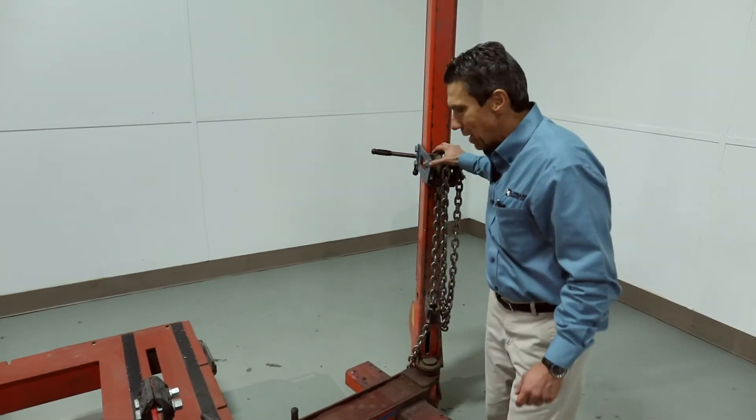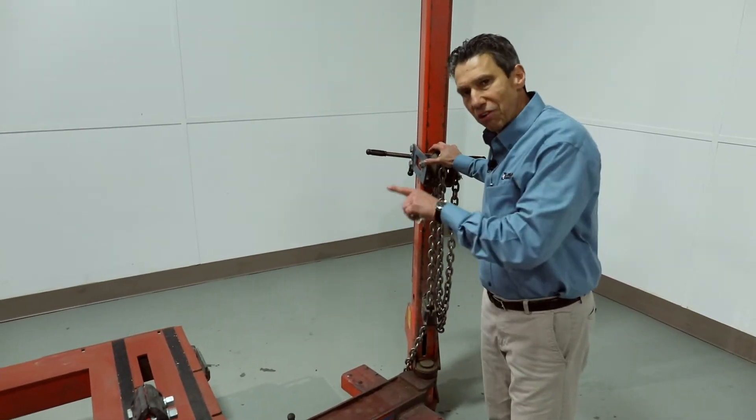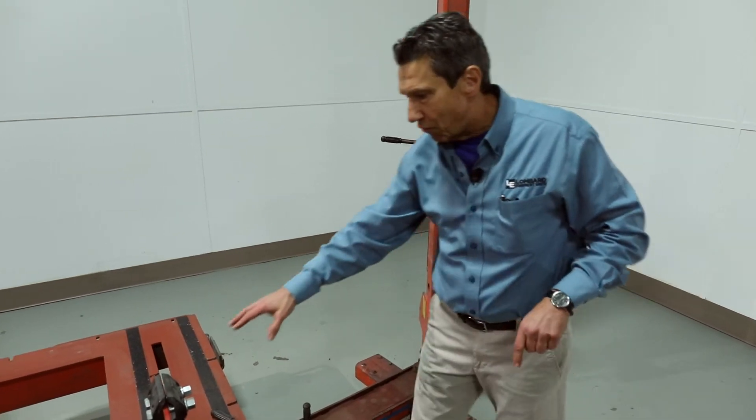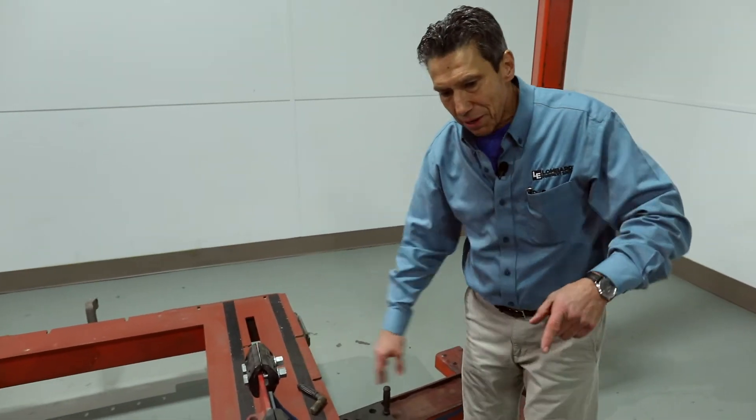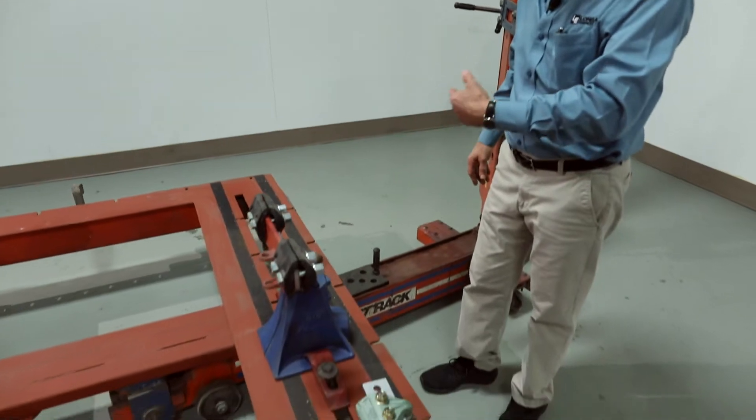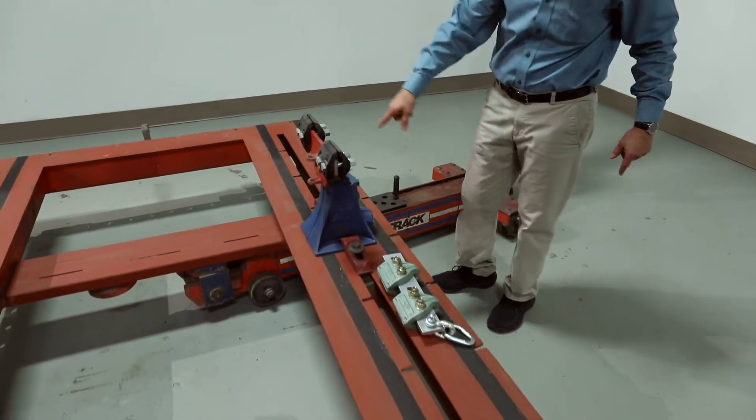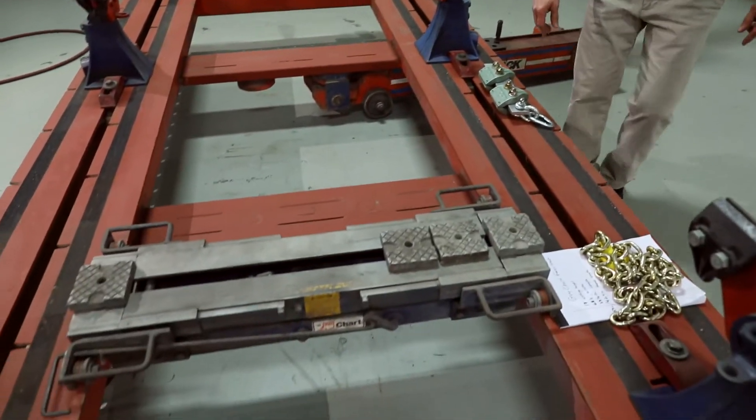It offers 10 tons of pulling power, 360-degree pulling, four-point anchoring, and a rolling scissor lift that floats up and down the entire center of the machine.